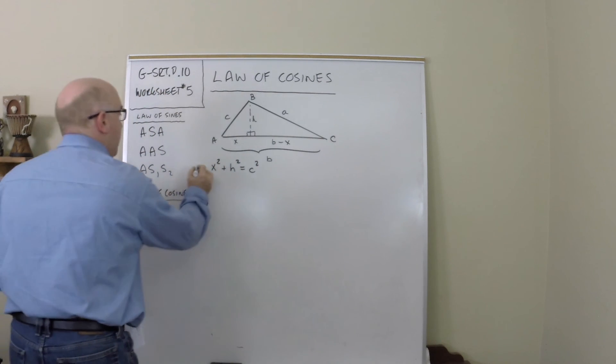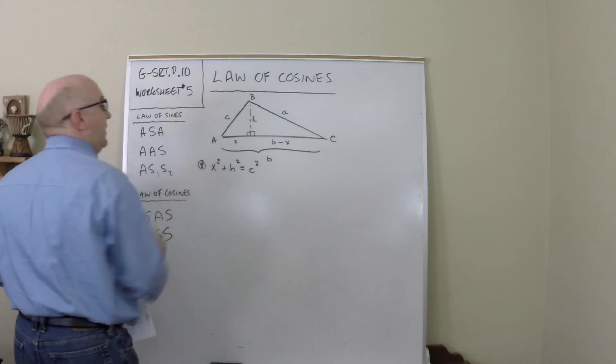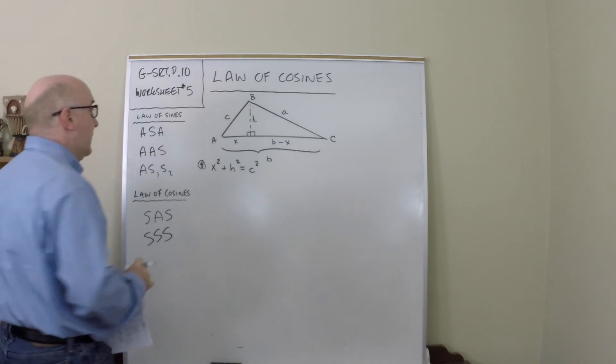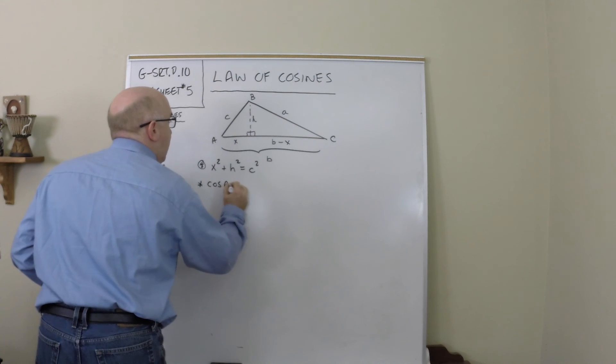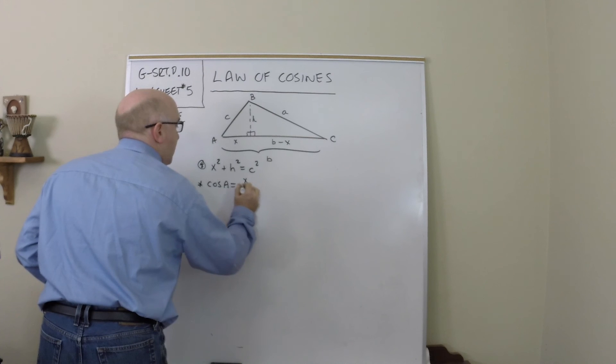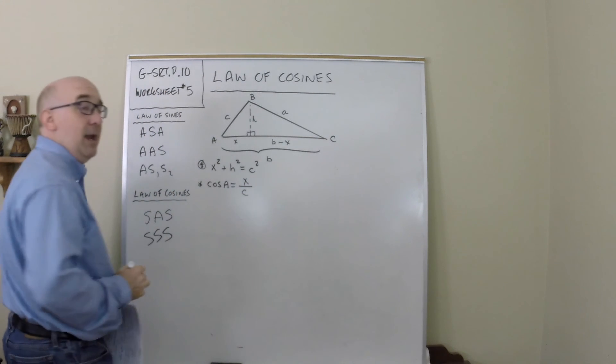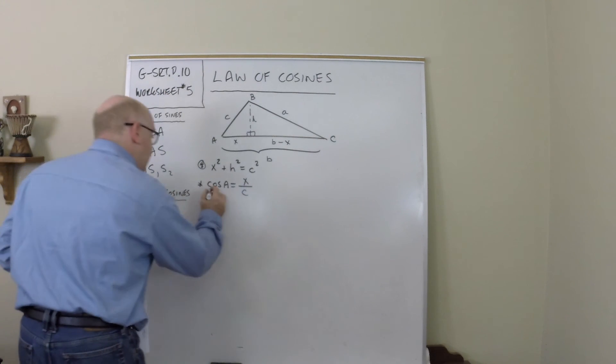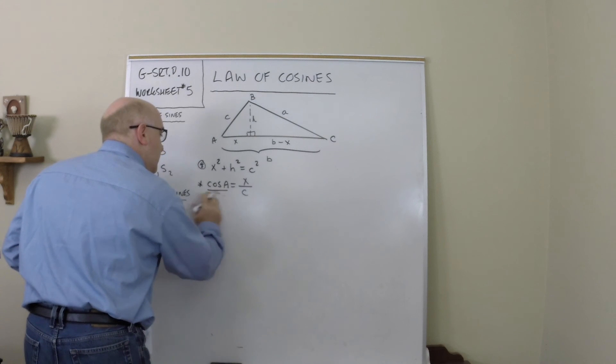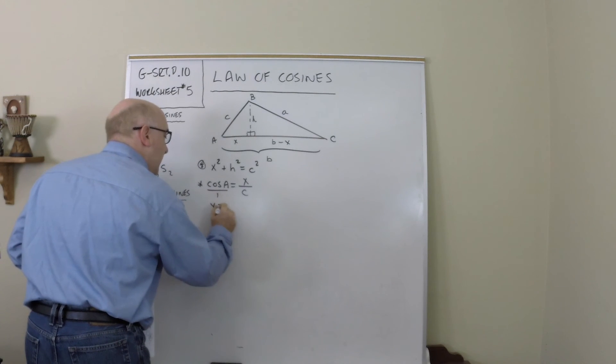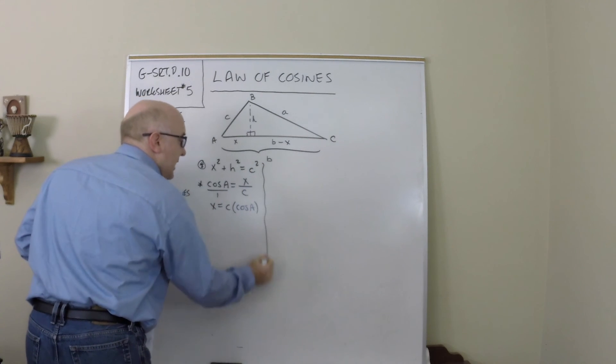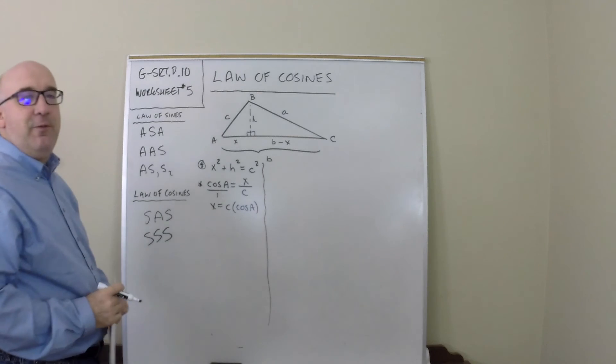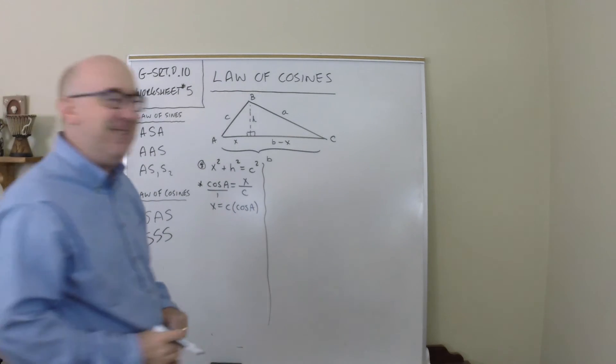That's one relationship I'm going to use later. And the second thing I'm going to use is that the cosine of angle a is x over c, and I'm going to solve that in terms of x. So when I cross multiply I get x equals c times the cosine of a. Now that's just some preparatory work for heading in the right direction.